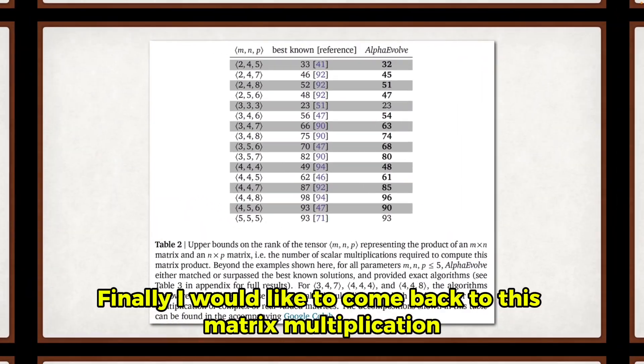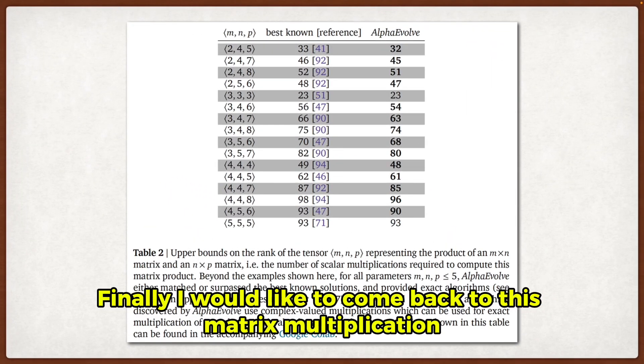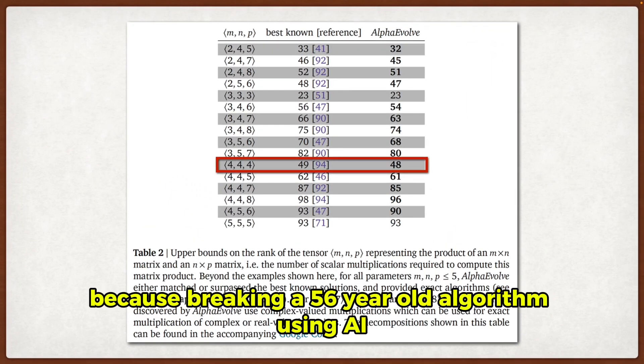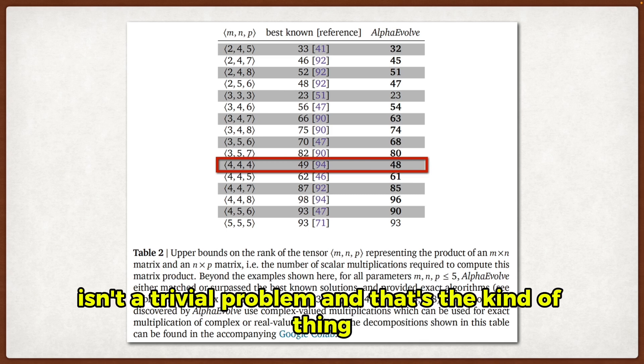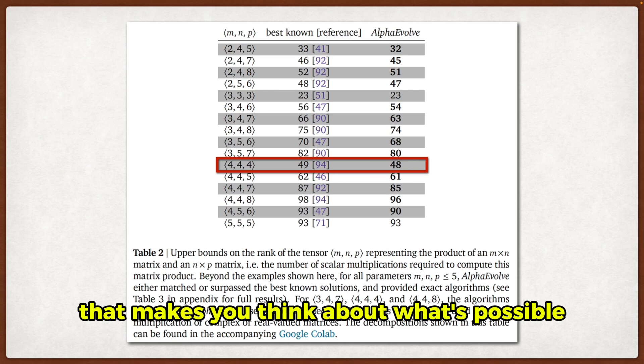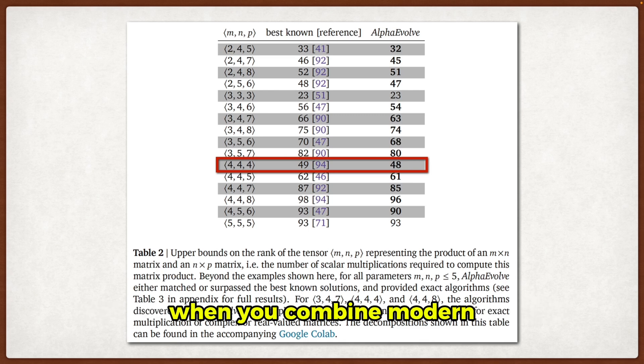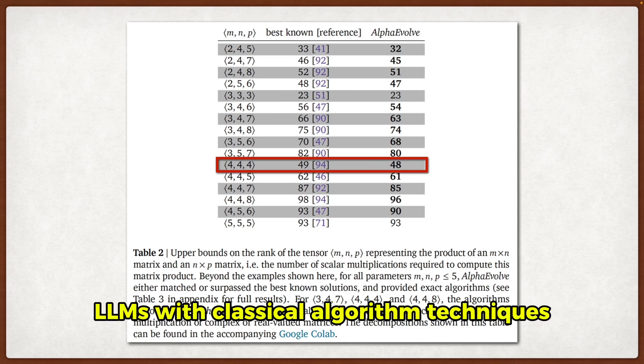Finally, I would like to come back to this matrix multiplication result, because breaking a 56-year-old algorithm using AI isn't a trivial problem. And that's the kind of thing that makes you think about what's possible when you combine modern LLMs with classical algorithm techniques.